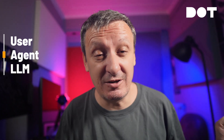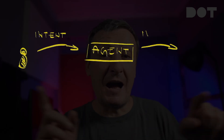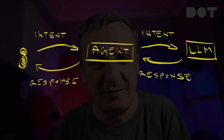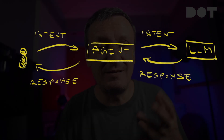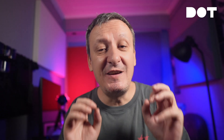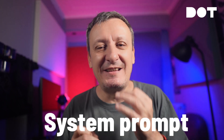The simplest possible architecture has the user sending intent to an agent, which passes it to the LLM, which responds back through the same chain. If anyone actually built systems that way, it was a long time ago — it's way too simplistic. We need much more. So what's missing? Let's talk about system prompts.